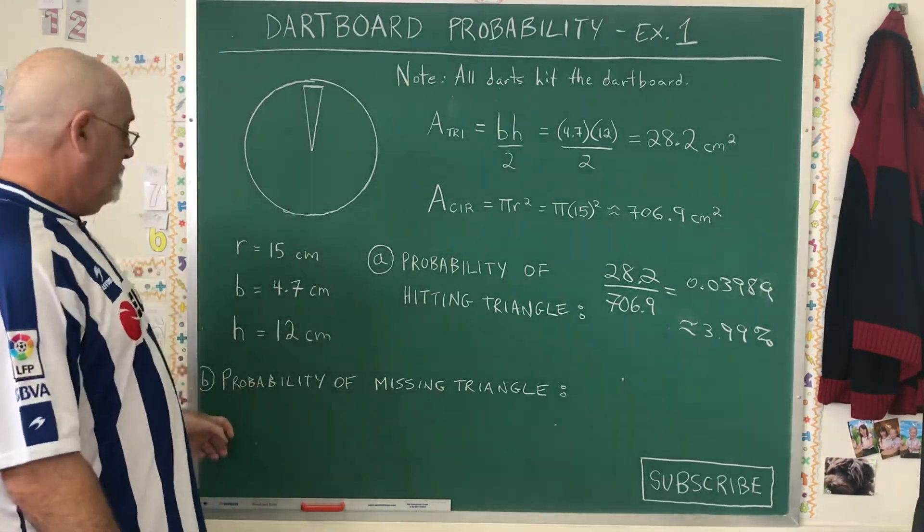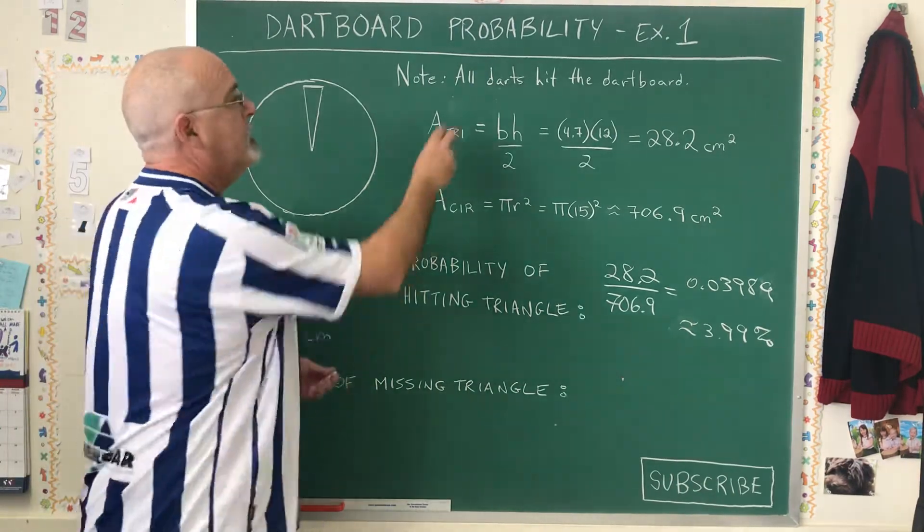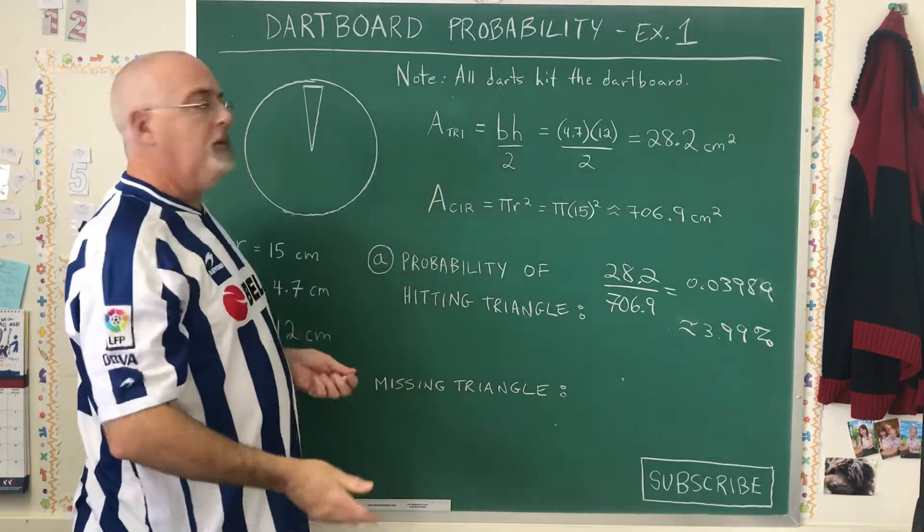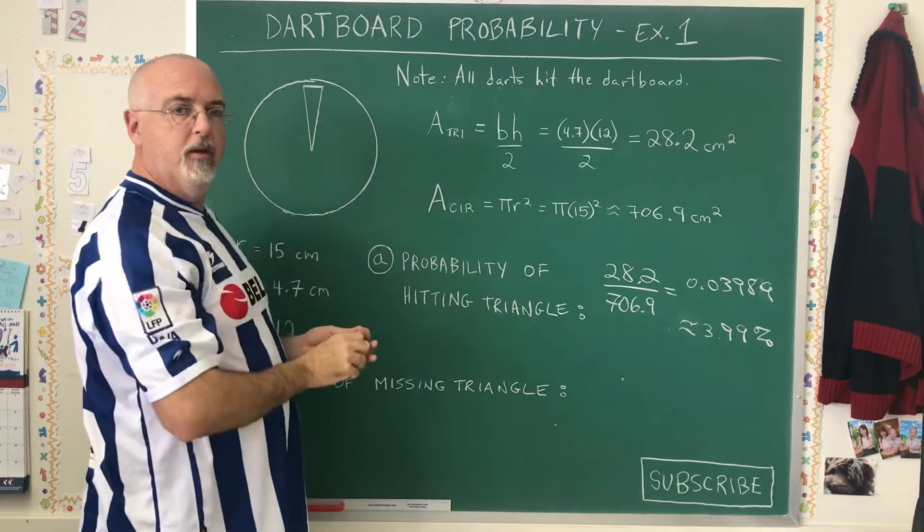In question B, what is the probability of missing the triangle? Again, all darts hit the dartboard, so that means what is the probability of getting it somewhere in the circle but not inside the triangle?